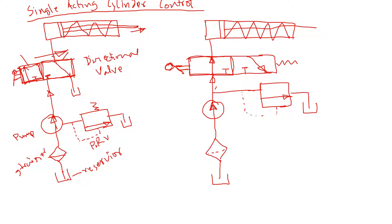When the left envelope is engaged, the flow goes into the cylinder and the rod will try to extend. Once it's done extending, there will be no more extension. If the pump is still running, all the fluid will go through the pressure relief valve — it connects here and dumps all the fluid back to the reservoir.